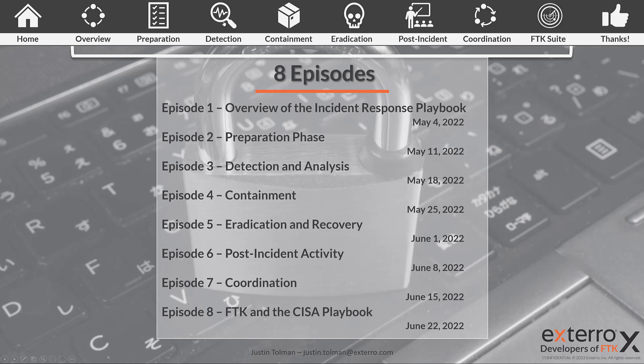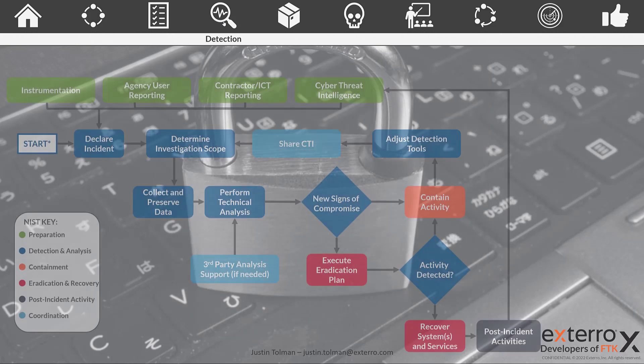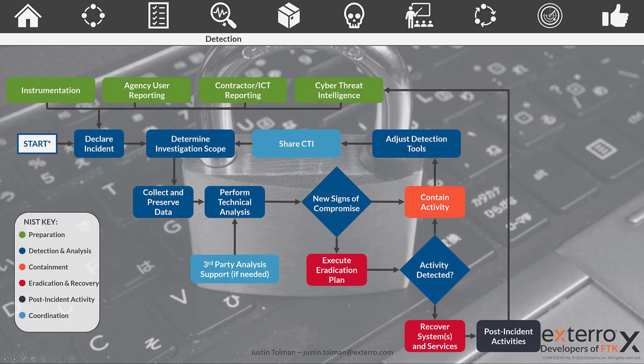Let's go over detection and analysis as part of the CISA Incident Response Playbook. Just as a review, this is the flow chart of the playbook. We've covered preparation, which is up in green, and now we're going to drop down — there's been an incident, so we need to begin jumping through the process of the playbook.